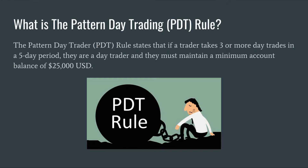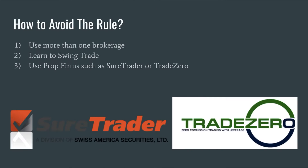So I learned some tips and tricks, which I'm going to talk about here. How to avoid the PDT rule: one way is to use more than one brokerage. I figured that out, so I used Robinhood and thinkorswim, but then I also realized there are firms such as Sure Trader and Trade Zero.